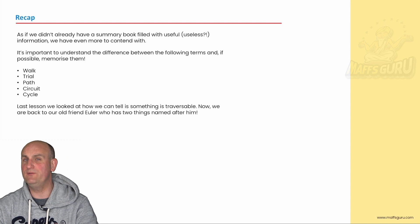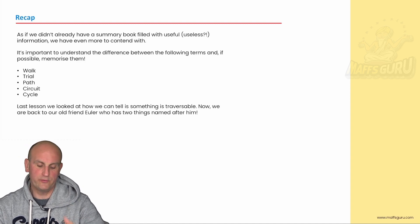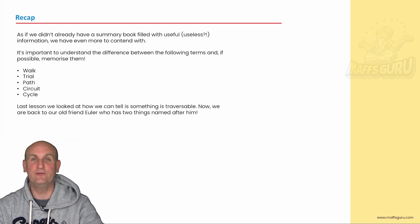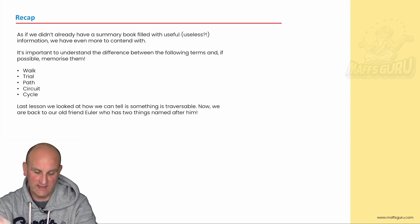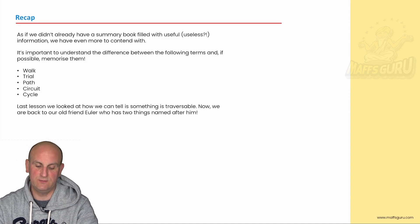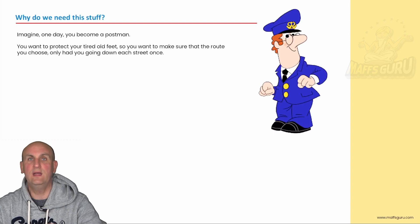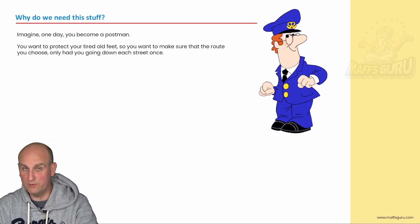Now, in a previous video — two videos ago if you're watching these in order — we talked about walks, trails, paths, circuits, and cycles. And to this day, I do not remember this. I taught it literally 10 minutes ago and still cannot remember. That's why it's there for your summary book. But it's going to be built on now, because Euler actually has something very important to say about graph theory.